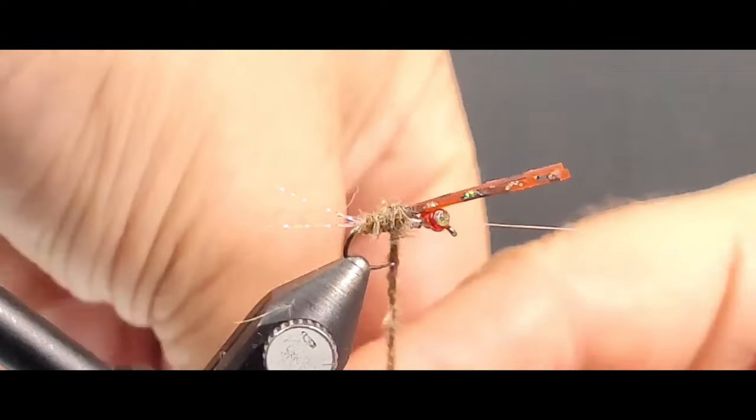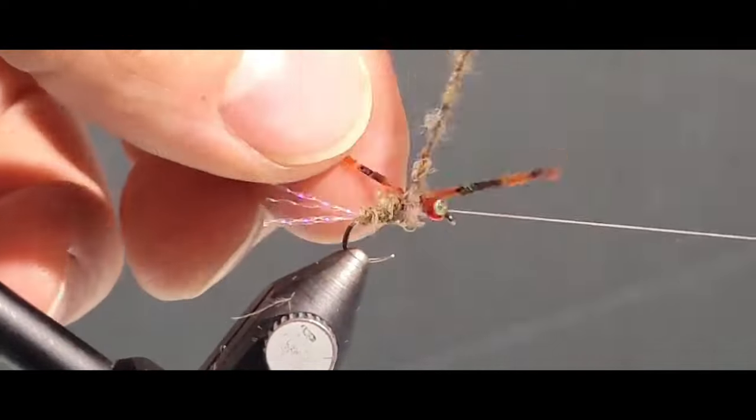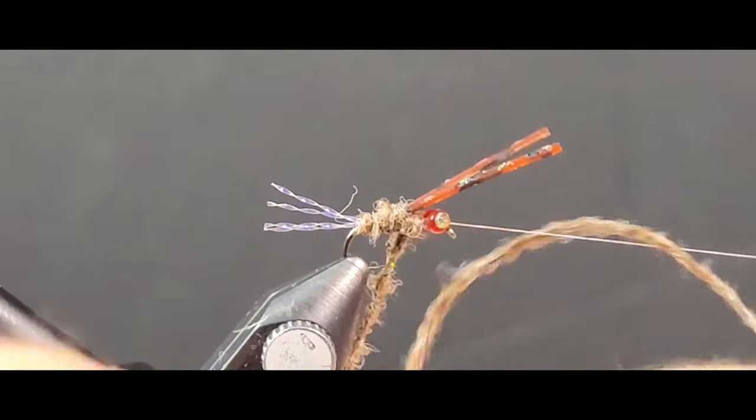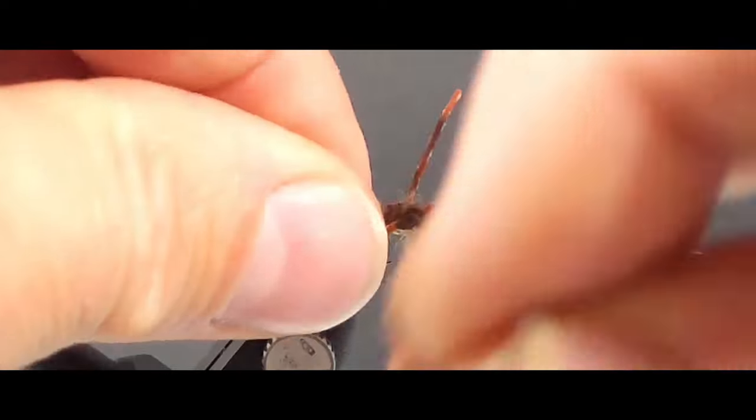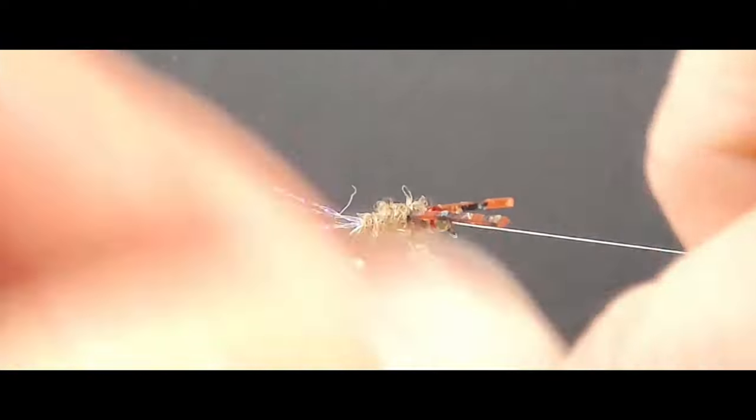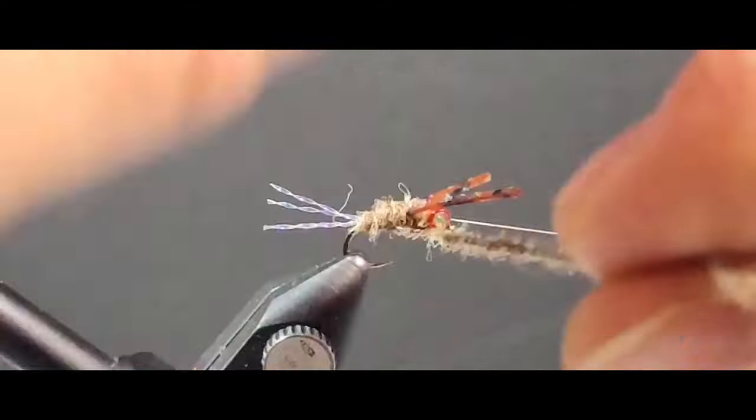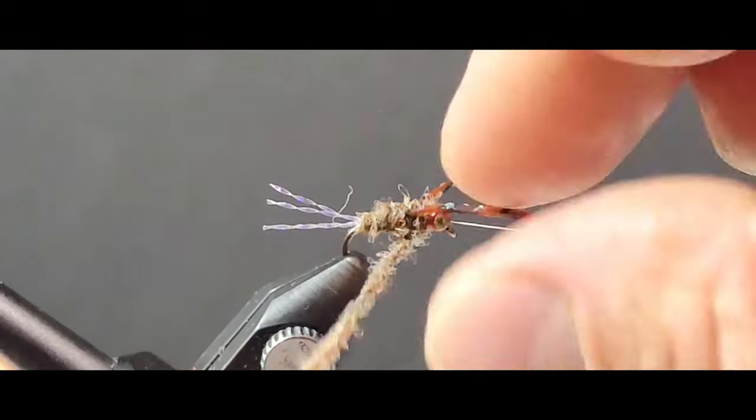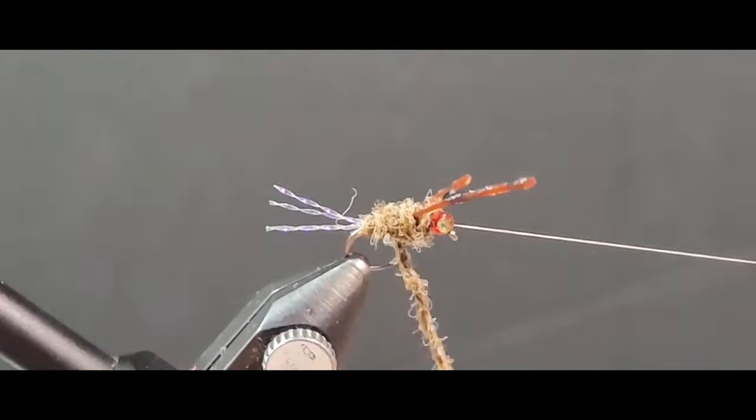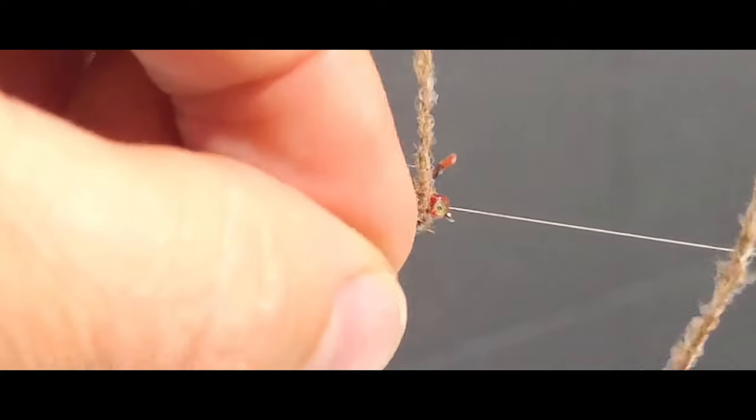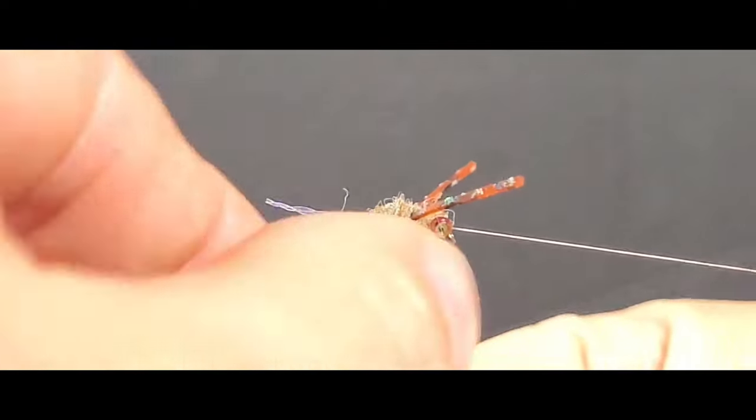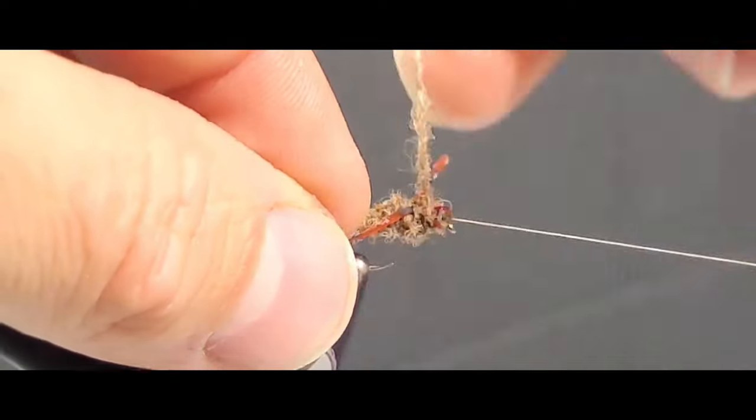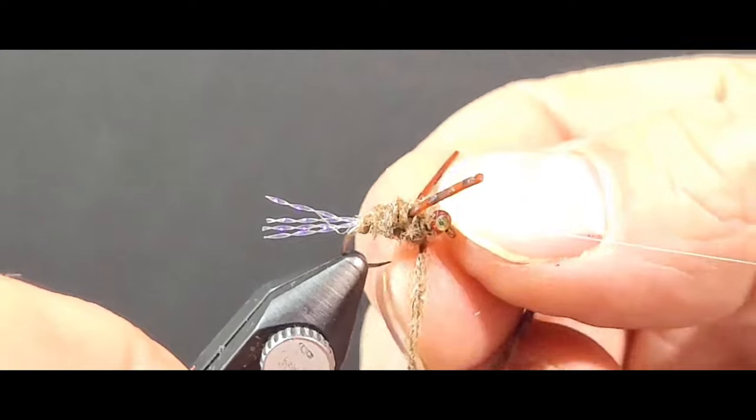As you wrap forward you're going to capture these on almost a 45 degree angle. That's what the natural back swimmers and water boatmen look like - they've got those legs that are pointing forward, they almost look like little oars from a boat. I guess that's why they get their name, the boatman. The back swimmers kind of look like they'll swim inverted oftentimes.